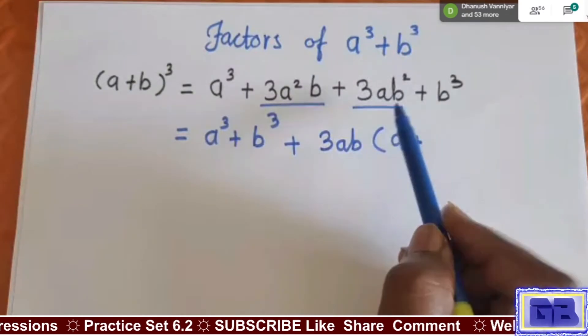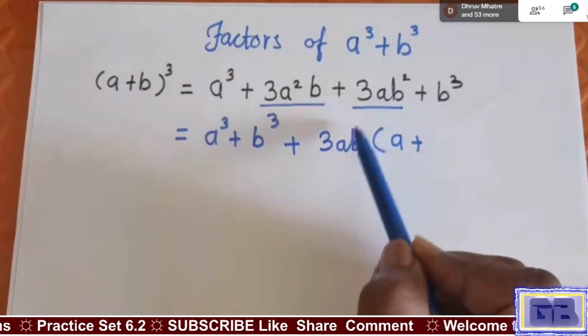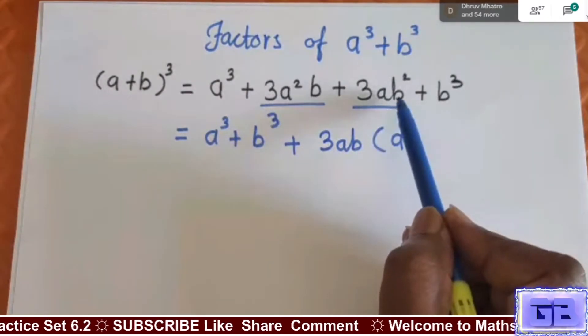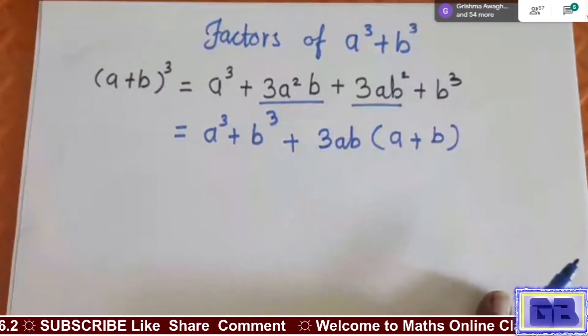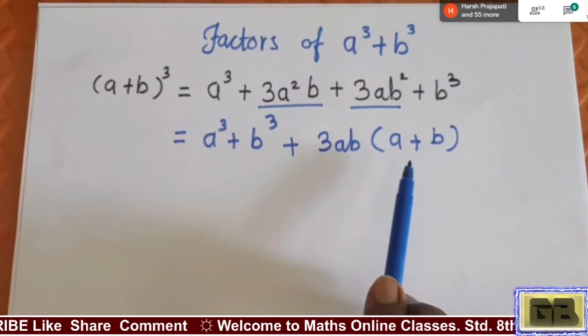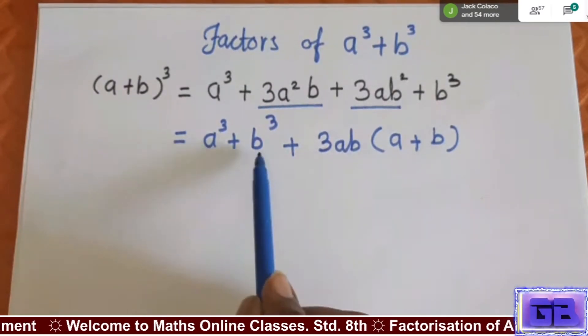So we are looking at this term. We have removed 3ab outside and what is left here? b is correct. So we have done this arrangement. Did you understand up to this? The next thing we want a³ + b³ on one side and rest things we have to shift to the other side.